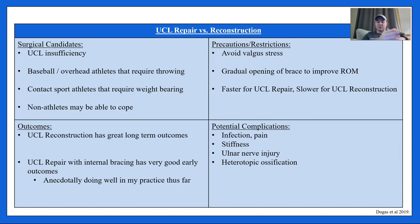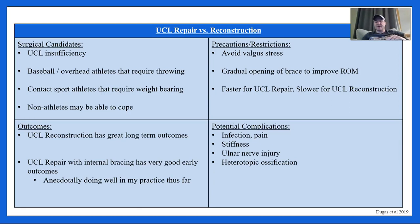Return to full range of motion is faster for UCL repair and slower for reconstruction, due to the amount of tissue damage with reconstruction. Outcomes: reconstruction has long-term outcome data; UCL repair has very good early outcomes, and anecdotally patients are doing very well — a college pitcher recently hit 90 mph at about 11 to 12 months post-procedure. Potential complications include infection, pain, stiffness, ulnar nerve injury, and heterotopic ossification — abnormal bone growth in the elbow.